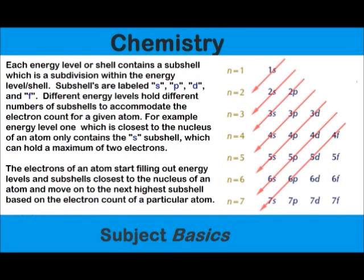Energy level 4 contains subshell S, subshell P, subshell D, and subshell F. Subshell F can hold a maximum of 14 electrons. So adding subshell F's 14 electrons to the total of 18 electrons that S, P, and D hold together in total, we see that energy level 4 can accommodate a maximum of 32 electrons.